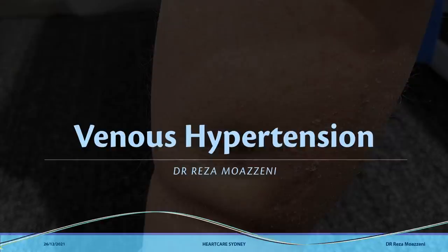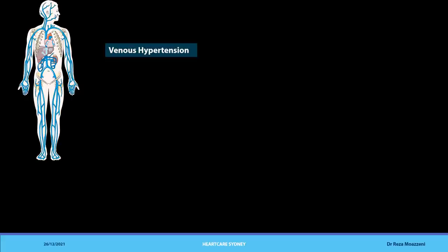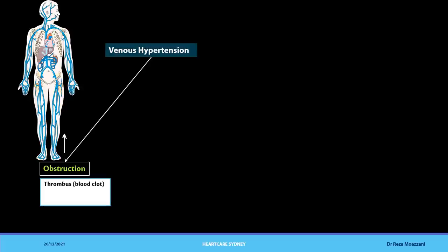In the category of venous hypertension, there are two main pathophysiologies contributing to swelling of the legs. The first is obstruction — any pathology obstructing the flow of blood from the periphery towards the heart can cause increased pressure inside the venous system and subsequent edema. One example is a thrombus or blood clot, what we call DVT or deep venous thrombosis, which can cause a unilateral and sometimes painful swelling depending on the level of the clot.